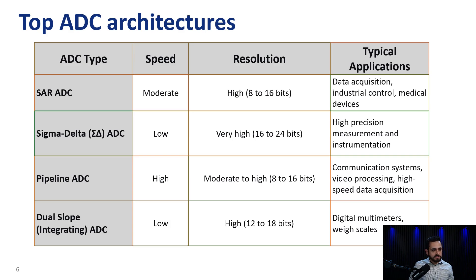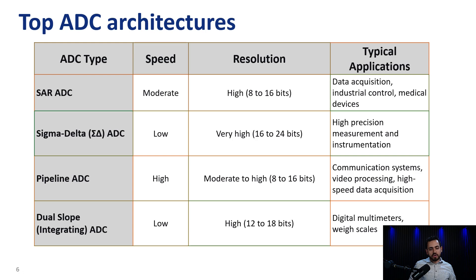And lastly, we have dual slope type ADCs, where they integrate the input signal over a fixed period and then measure the time it takes to return to zero. They are known for high accuracy and noise rejection, offering low speed but up to 18 bits of resolution.